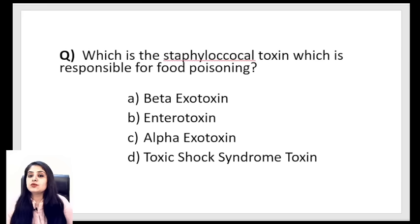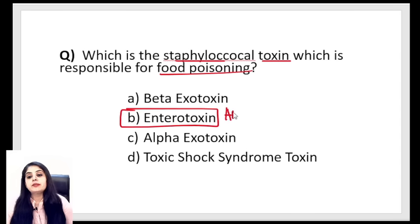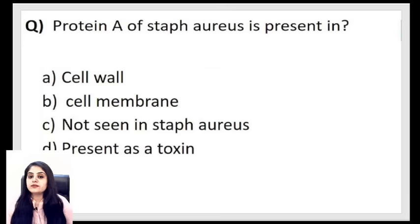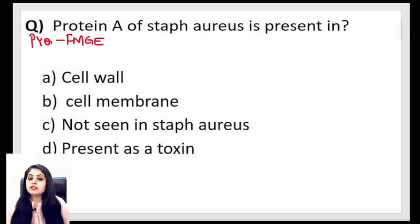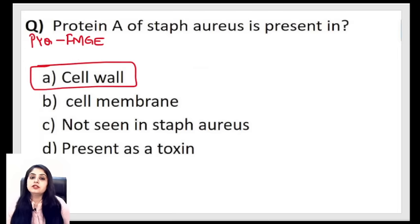Let's attempt some questions. Which staphylococcal toxin is responsible for food poisoning? Options: beta exotoxin, enterotoxin, alpha toxin, TSST. For food poisoning, the intestine comes to mind and enterotoxin is the best answer. Next PYQ from FMG: Protein A of Staphylococcus aureus is present in — cell wall, cell membrane, not seen, or present as a toxin. We studied this: Protein A is present in the cell wall of the bacteria.